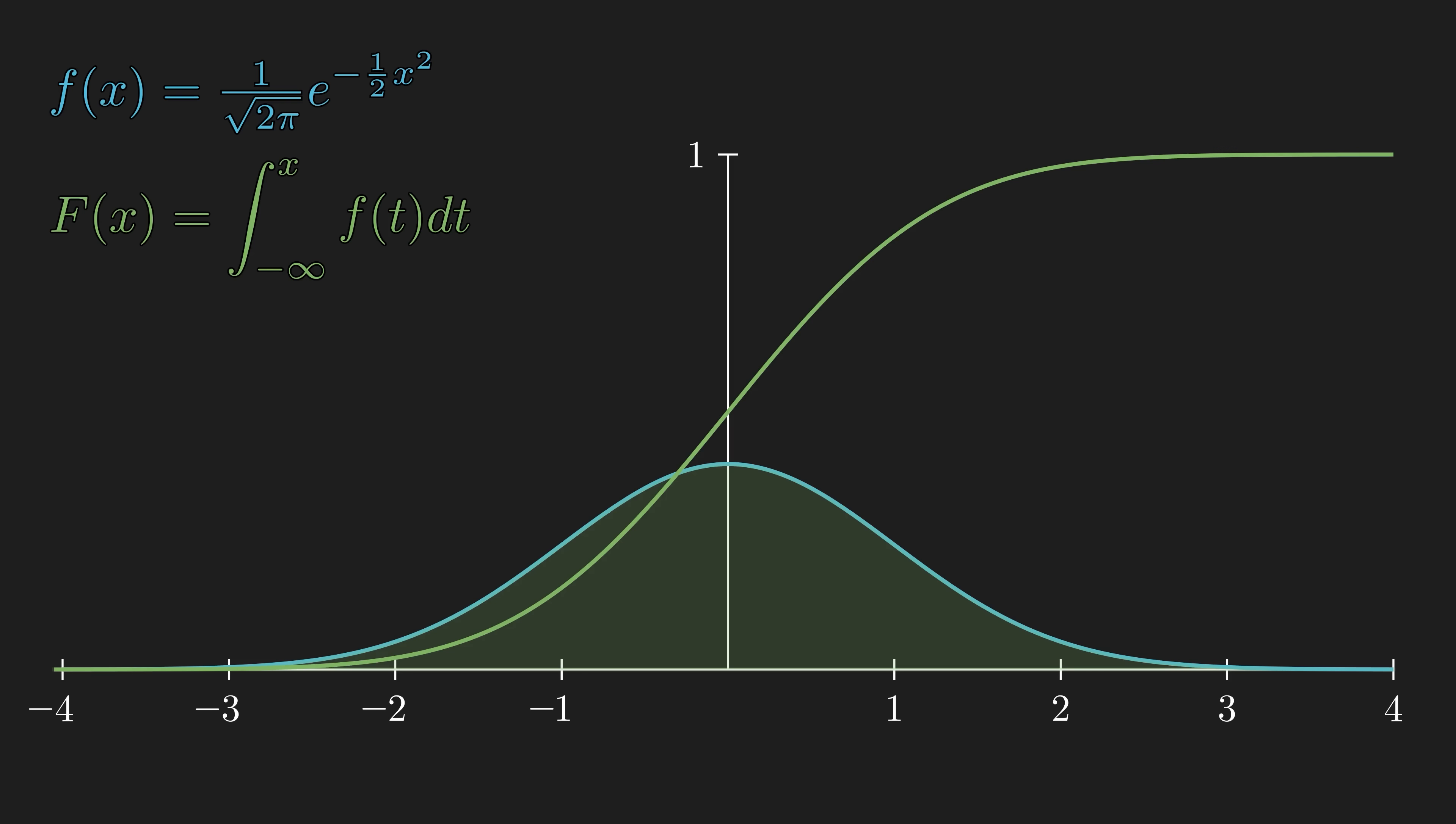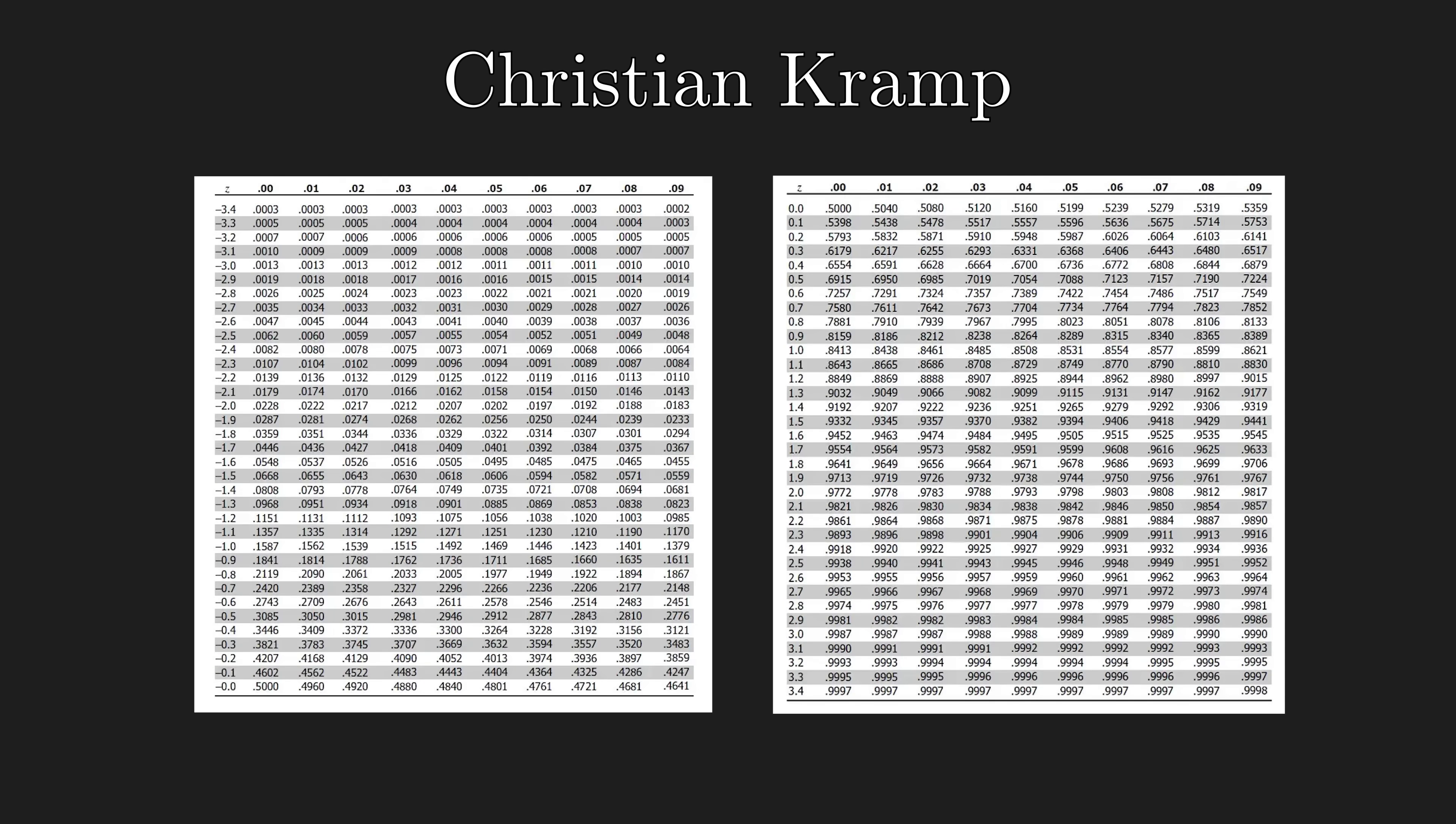As useful as this new function is, we don't have a nice formula for this new function. So the French astronomer Christian Kramp painstakingly computed the values of this function by hand, and we now call this the z-table.